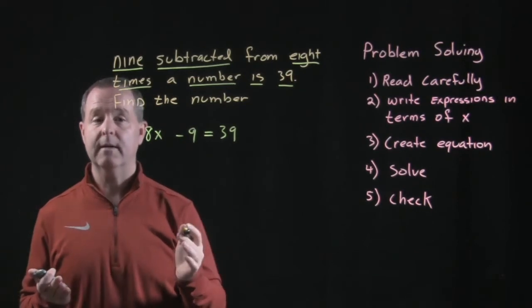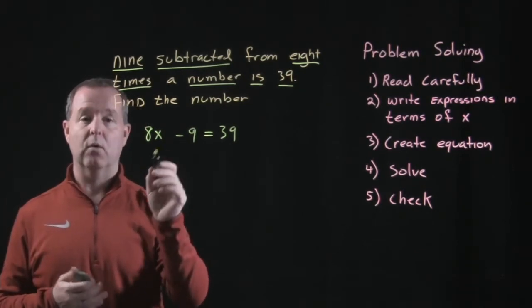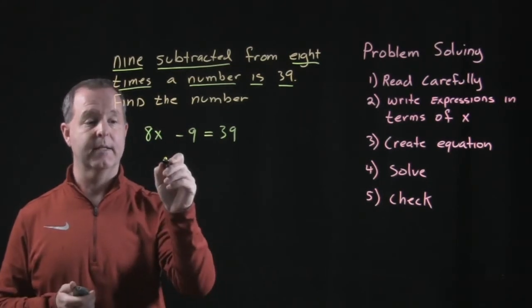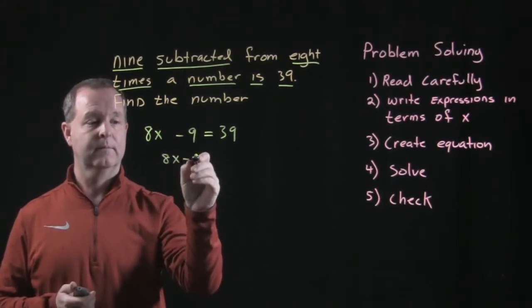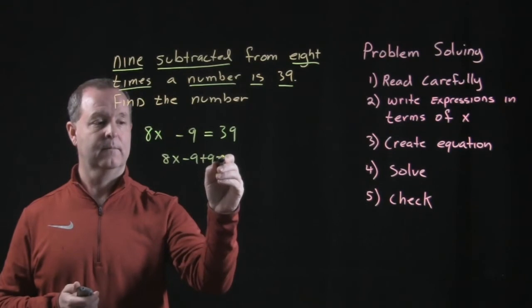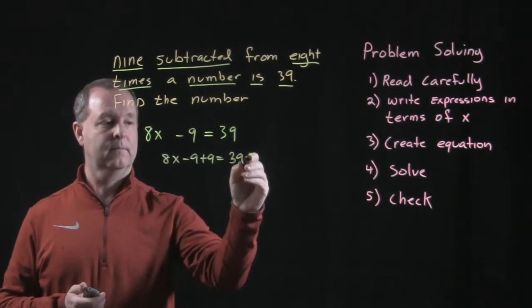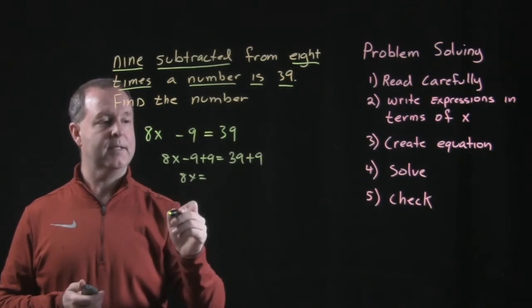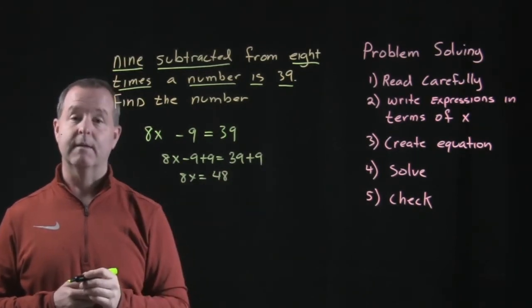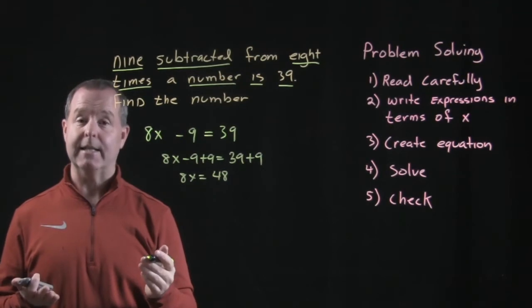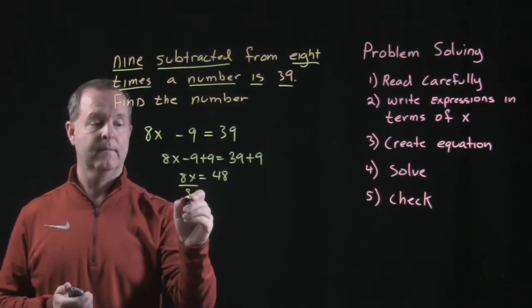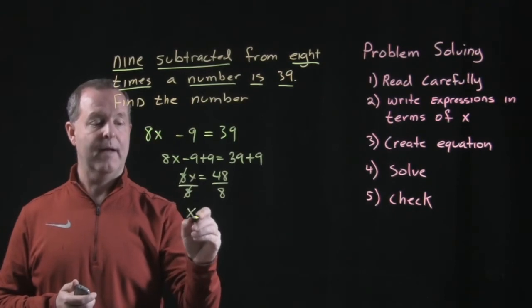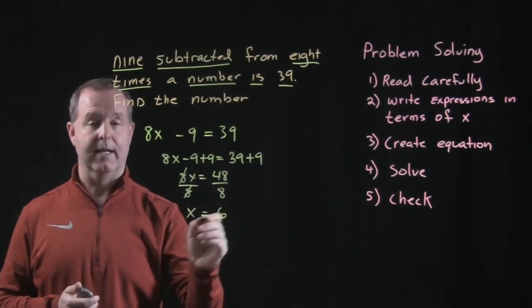What do we do from here? Well, we solve. So we isolate the variable term, which is 8x. So we're going to add 9 to both sides. 39 plus 9 is, what, 48? Divide both sides now by 8 to isolate the variable. So I'm left with x equals 6.